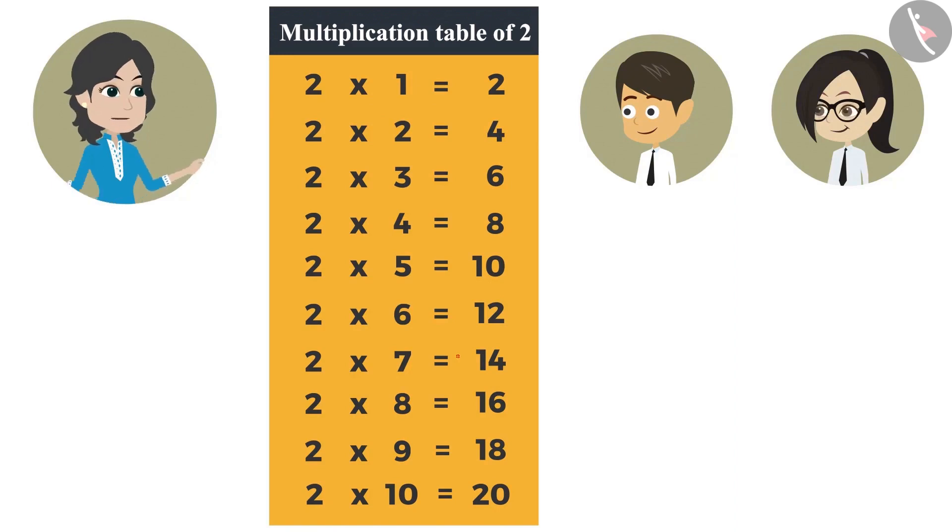We remember the table of 2 like this. 2 ones are 2, 2 twos are 4, 2 threes are 6, 2 fours are 8, 2 fives are 10, 2 sixes are 12, 2 sevens are 14, 2 eights are 16, 2 nines are 18, 2 tens are 20.